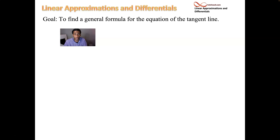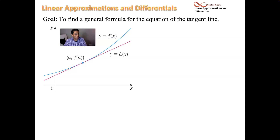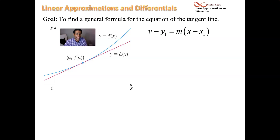We want to find a general formula that represents the tangent line for whatever function you might want to find it for. So the visual is helpful — you've got some graph of a function in blue. That function y equals f of x has some particular point of interest, x equals a, where you're finding the tangent line. You plug in x equals a, out comes f of a, and we'll have a tangent line. We'll call that line capital L of x.